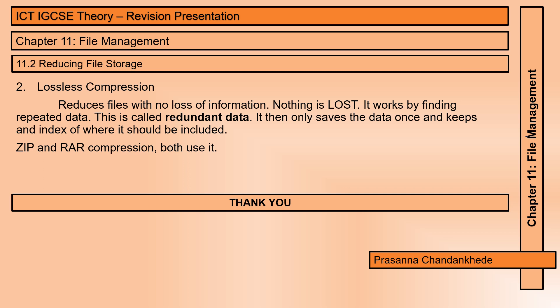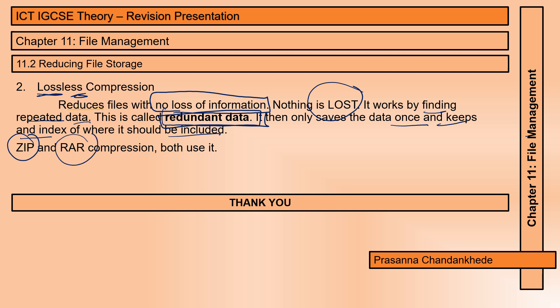That is not the case for lossless compression. Lossless compression reduces file size with no loss of information — that's the key difference. Lossy involves permanent deletion of information; lossless, as the name suggests, has no loss of information. It works by finding repeated data, called redundant data, saving it only once and keeping an index of where it should appear. ZIP and RAR compression both use lossless compression.